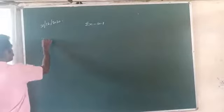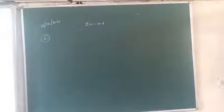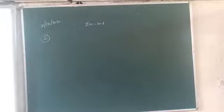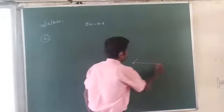Look at the second question. The question is: draw a line L, draw a perpendicular to L at any point on L. Firstly, draw a line L — this is the line L.